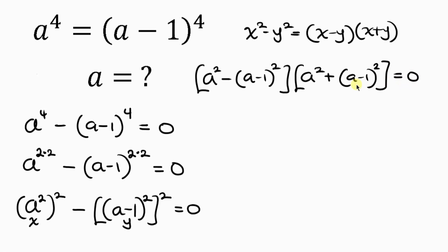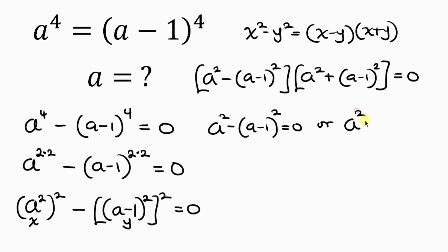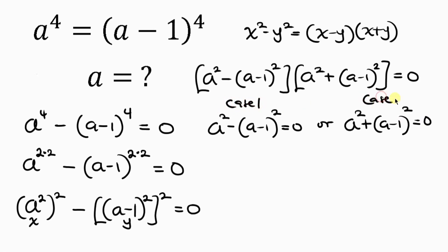Now we have two cases. Case 1: a squared minus a minus 1 all squared equals 0. Case 2: a squared plus a minus 1 all squared equals 0.